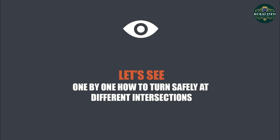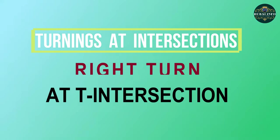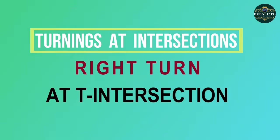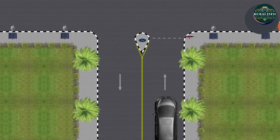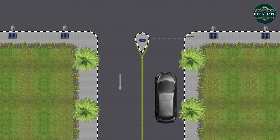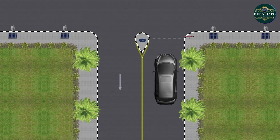Let's see one by one how to turn safely at different intersections. Right turn at T intersection. To make a right turn from a T intersection, plan well in advance.